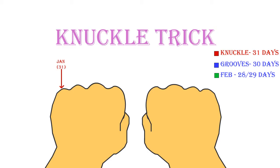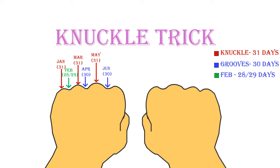January: 31 days. February: 28 days in a common year and 29 days in leap years. March: 31 days. April: 30 days. May: 31 days. June: 30 days.